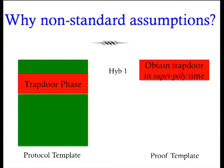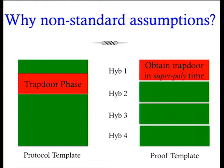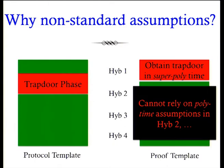In the hybrid arguments, we start by running in superpolynomial time to get the trapdoor, and once we have it we can make various changes in the protocol until we arrive at the simulator. But as soon as we start running in superpolynomial time in the initial hybrid, in the later hybrids we cannot rely on polynomial time assumptions anymore because these hybrids are inefficient — they are already running in superpolynomial time, so we can trivially break polynomial time assumptions. This is why prior works require superpolynomial time assumptions.